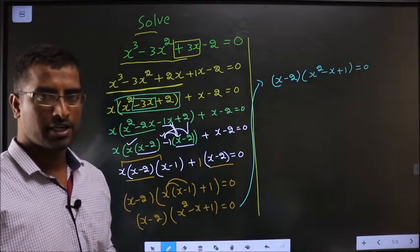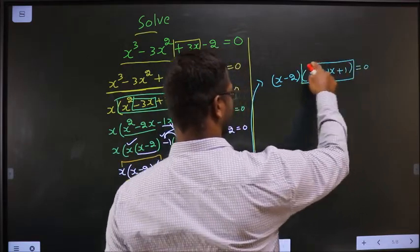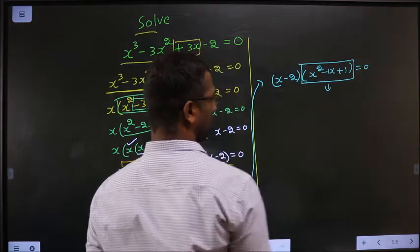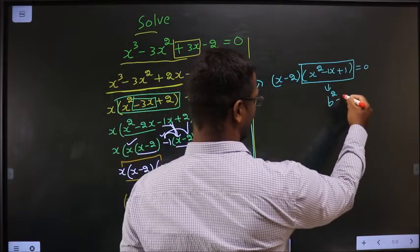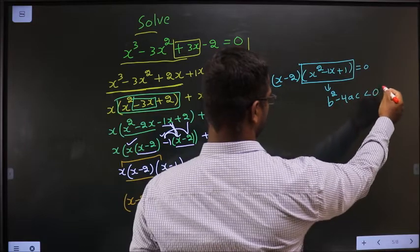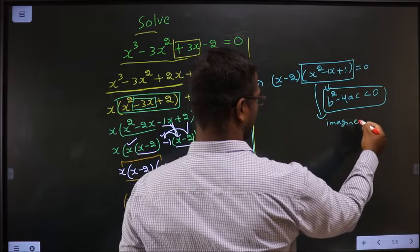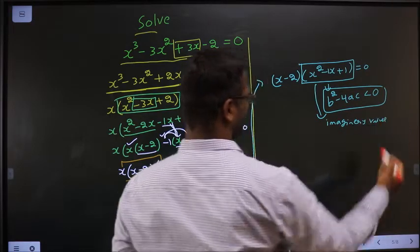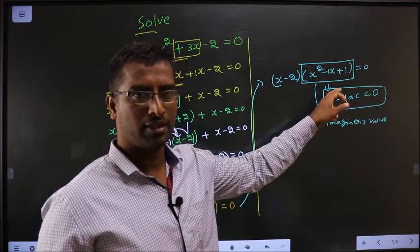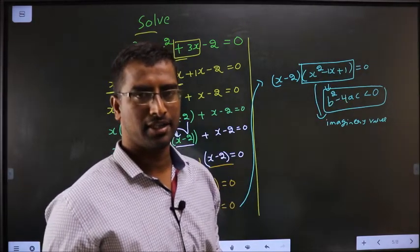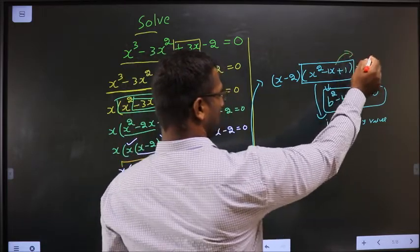This I will not be able to factorize. The reason is b square minus 4ac is less than 0, or else we get imaginary values for x. We are unable to factorize it. Even if we apply the formula, we will get complex roots or imaginary roots. So leave that.